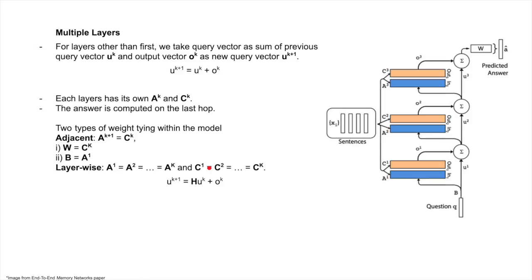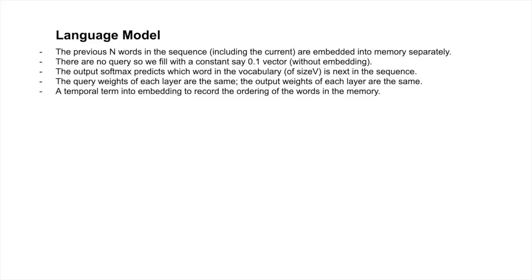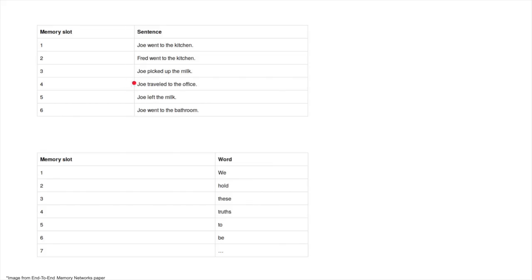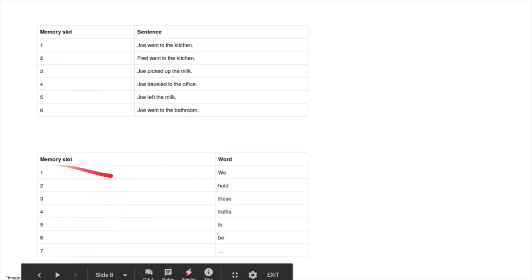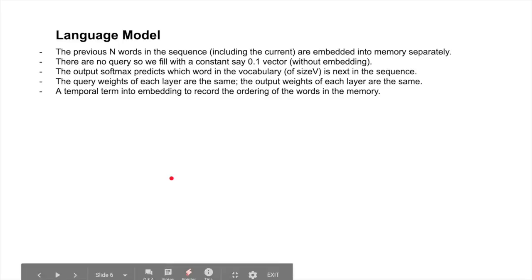It is also used in a language model, which was the main reason to read this paper. In the language model, in the case of the sentence, we use words to store in the memory slot, and there is no query, so we use a 0.1 constant vector without any embedding.